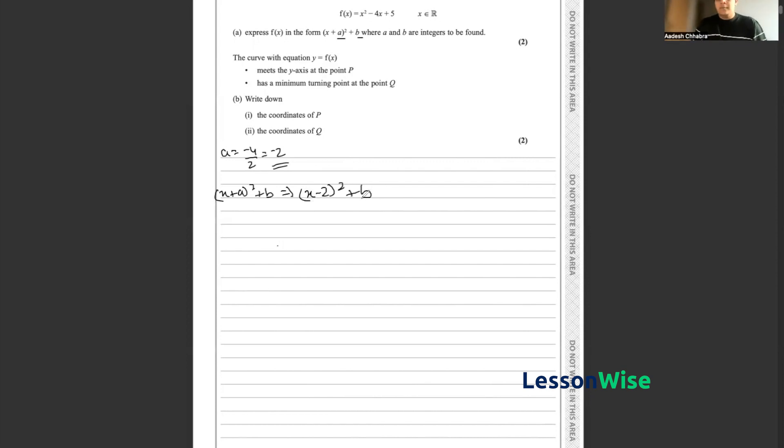Now, to find b, all we have to use is the knowledge that the equation, whether it is in this form or this form, is going to be exactly the same.